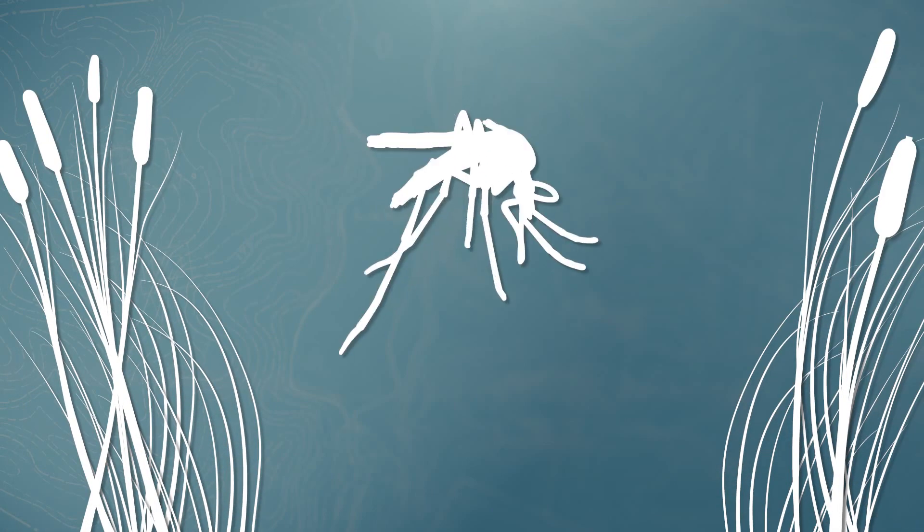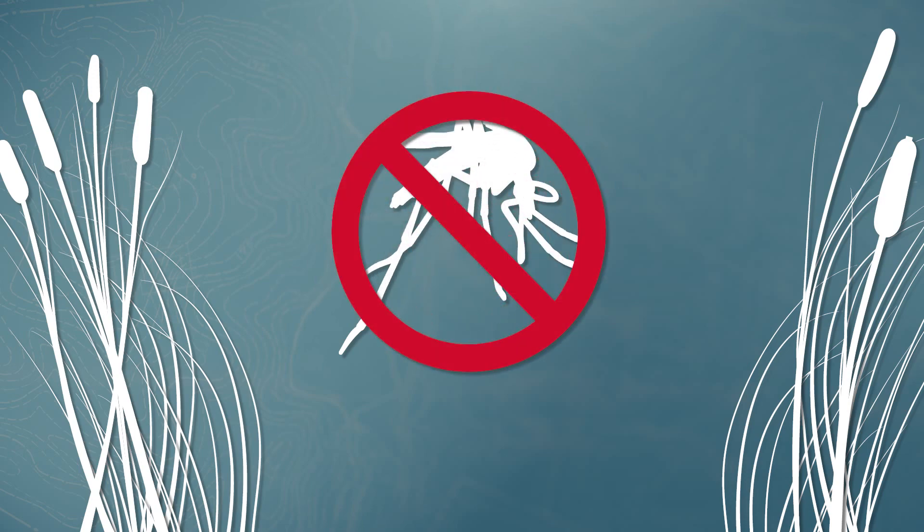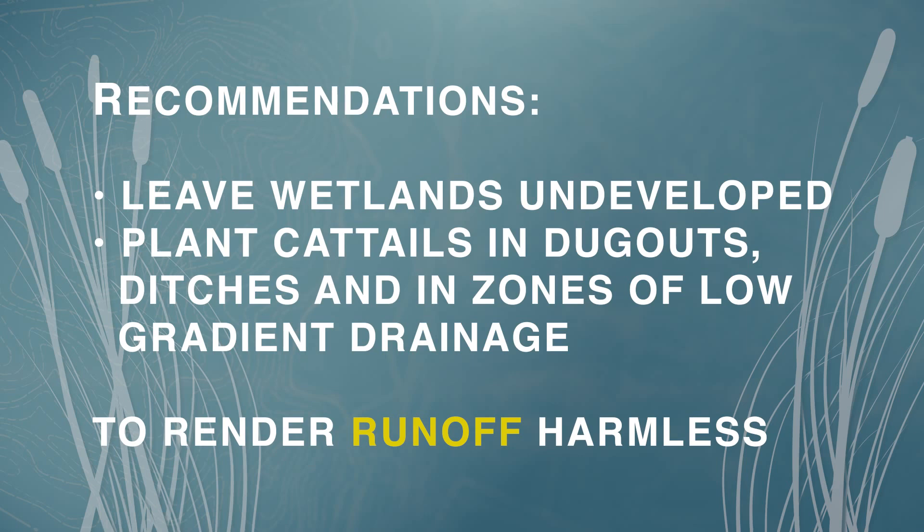When we think of swamps, we often think of mosquitoes. But the study also shows that cattails secrete a larvicide from their root, which kills mosquito larvae. As a result, the Saskatchewan government began to recommend feedlots and farm operations leave wetlands undeveloped, and plant cattails in dugouts, ditches, and in zones of low-gradient drainage to render runoff harmless.